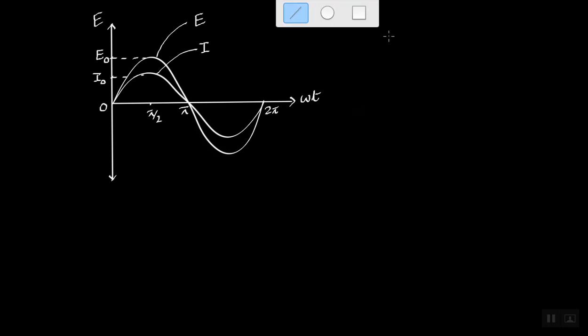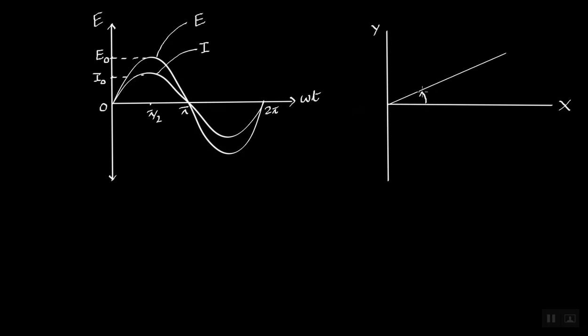Now, let us draw the phase relationship between the two. This part is y, this is x. Now tell me which one is larger? e0 or i0? e0 is larger. So e0 is rotating this way, rotating anticlockwise. And this angle here is omega t, the angle that this vector makes with the x-axis. So this is e0.